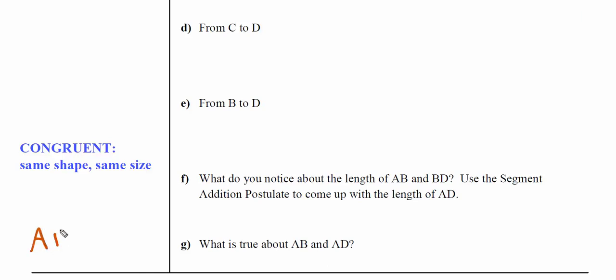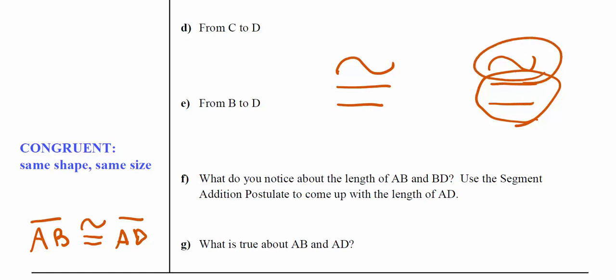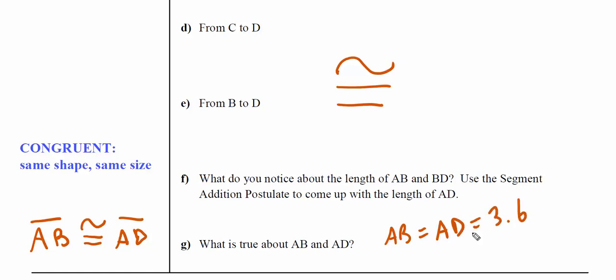We can then say that AB is congruent to AD. The symbol for congruent is this symbol - it's an equal sign with another symbol on top. This is like a super equal. It's not just equal as in the same number, it's equal as in the same number and the same shape and the same size. What we can say in part G is that AB and AD are equal to each other (3.6) and from a geometry point of view, they are congruent.